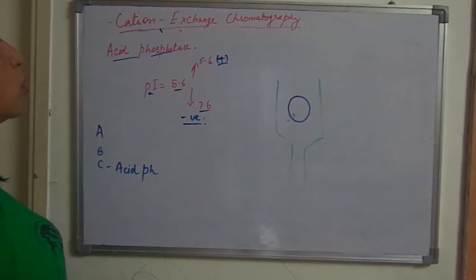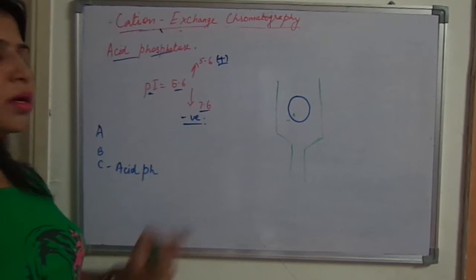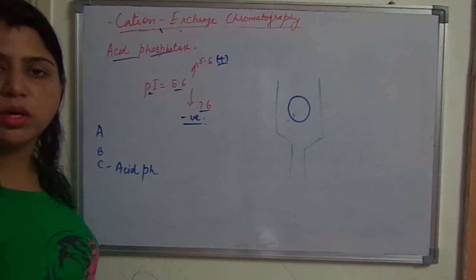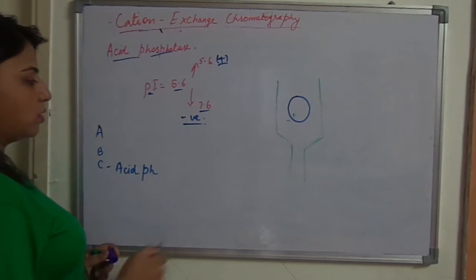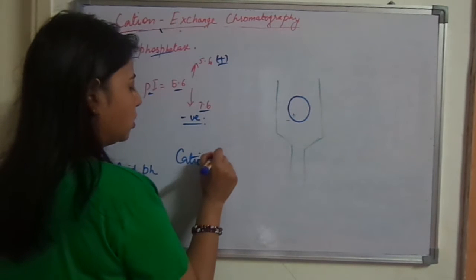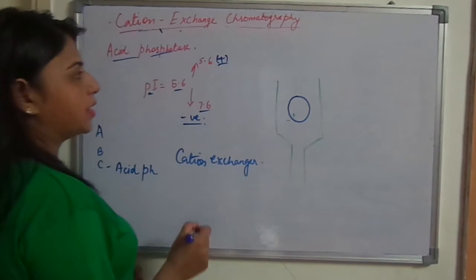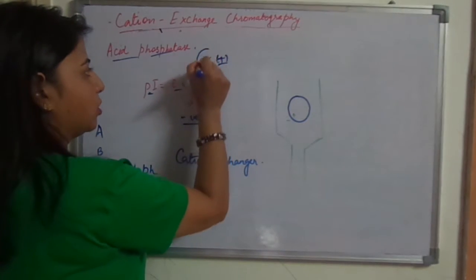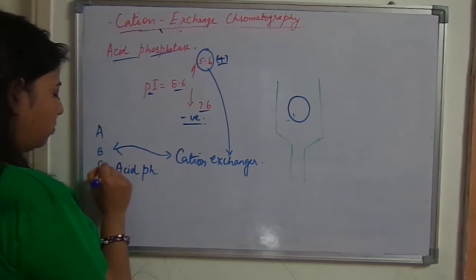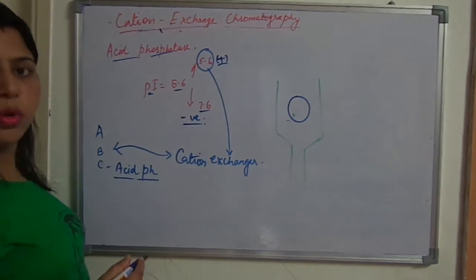This is one of the most important advantages of ion exchange chromatography - that you can use this technique at positive and negative charges. In both cases you can use it. If you have a cation exchanger available in your lab, then you can apply this sample ABC containing acid phosphatase at pH 6.6.